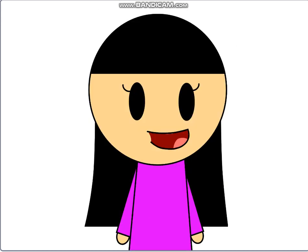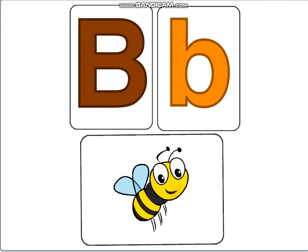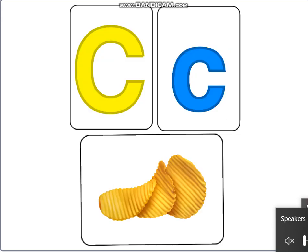Now you try it on your own. This time I'll say the letters, see if you can remember the words. A for Angry Ant. B for Busy Bee. C for Curly Crisp.